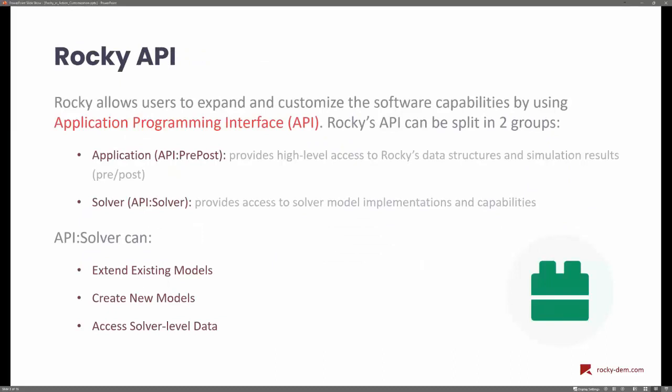Talking about the Rocky API — API stands for Application Programming Interface — in Rocky we provide two sets of tools for customization. The first is the Application API, which gives you high-level access to Rocky's data structure so you can modify the preprocessing and post-processing steps of your simulation. The second tool is the API Solver, which lets you communicate with the core solver of Rocky to implement new models, extend existing models, create new models, or access, modify, and export data already calculated inside Rocky.